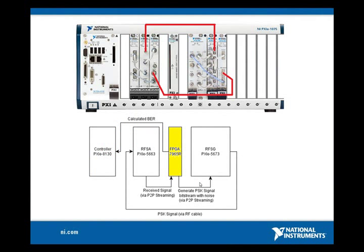For this demo, I'm going to generate an FPSK baseband signal from the FlexRIO PXIe-7975R with programmable noise and gain. This signal will be transferred to the VSG NI PXIe-5673 through NI peer-to-peer streaming technology at the rate of 100 MB per second.